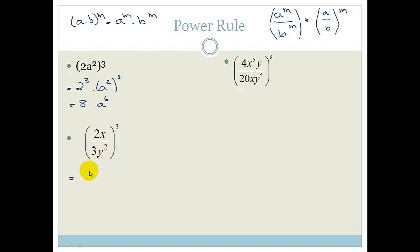So if we look, we can see, okay, we are going to break it up. We're going to go 2x all to the power of 3, all over 3y squared all to the power of 3.